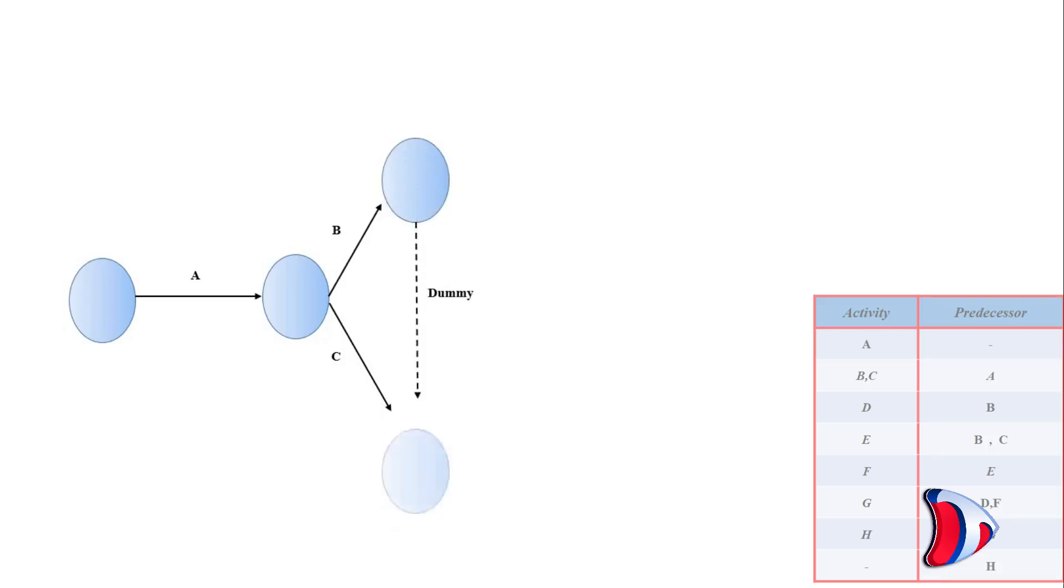Now since activity D emerges from activity B independently, while activity E emerges from combination of activity B and activity C, hence the dummy activity is introduced which originates from activity B and merges with activity C, from where activity E shall start. Also, activity D originates from activity B. Further, activity G starts with a combination of activity B and activity E, and afterwards activity H originates from activity G. Since from predecessor H no further activity originates, the PERT is complete.